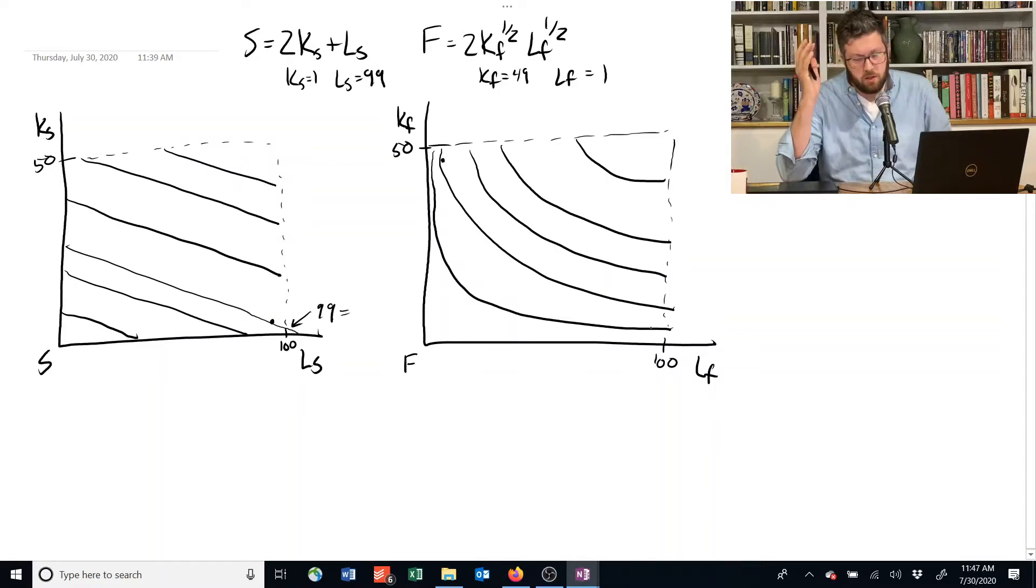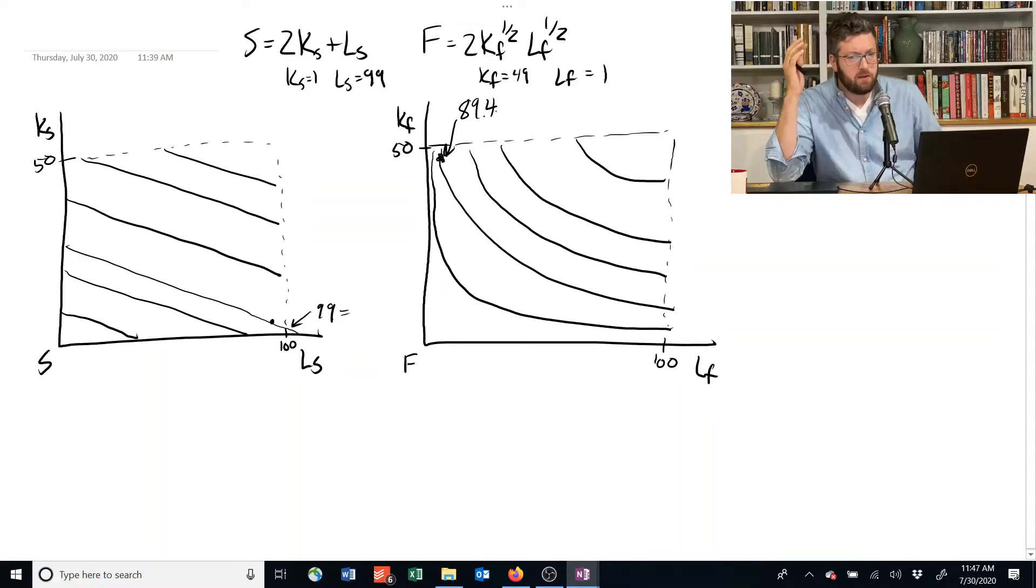Now we've got all this information in here, and I believe that this isoquant is 89.4 if you're using that much food and shelter, but it's kind of hard to interpret this. It's got all the information we need, but it doesn't help us determine if we're using our resources efficiently.